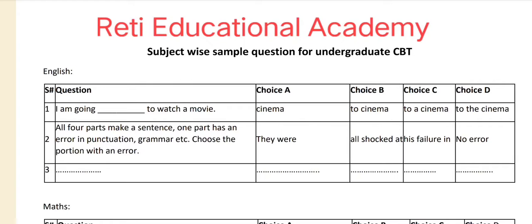The correct answer is D — I am going to the cinema to watch a movie. Question number two: all four parts make a sentence; one part has an error in punctuation, grammar, etc. Choose the portion with an error. The correct answer is D — there is no error.